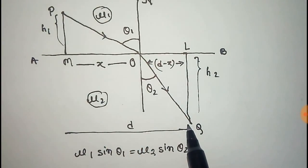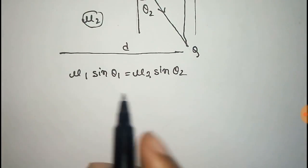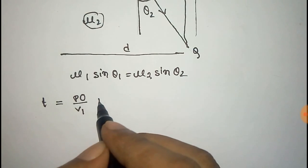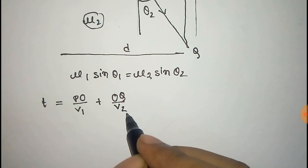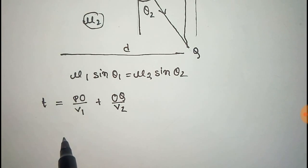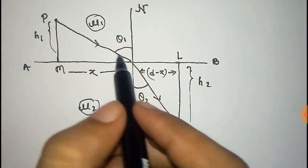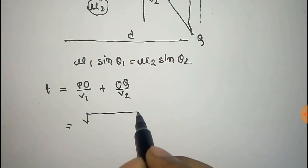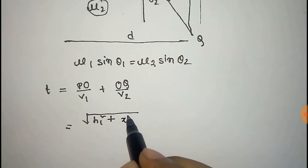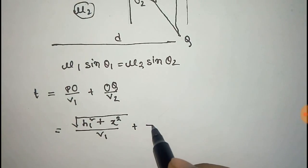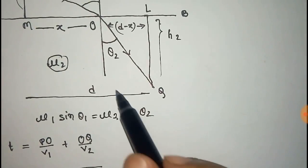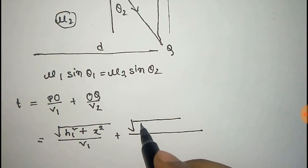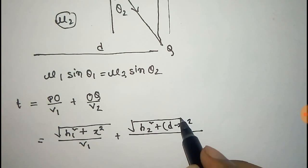So let's start. The total time taken for light to go from P to Q is given by T equal to PO by V1, where V1 is the velocity of light in the first medium, plus OQ by V2, where V2 is the velocity of light in the second medium. PO can be written as root over (X squared plus H1 squared) divided by V1, plus OQ can be written as root over (H2 squared plus (D minus X) squared) divided by V2.